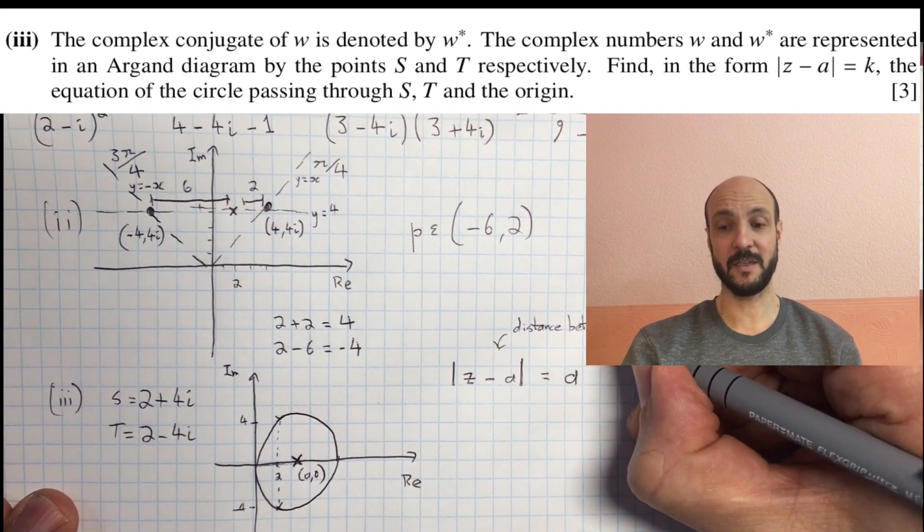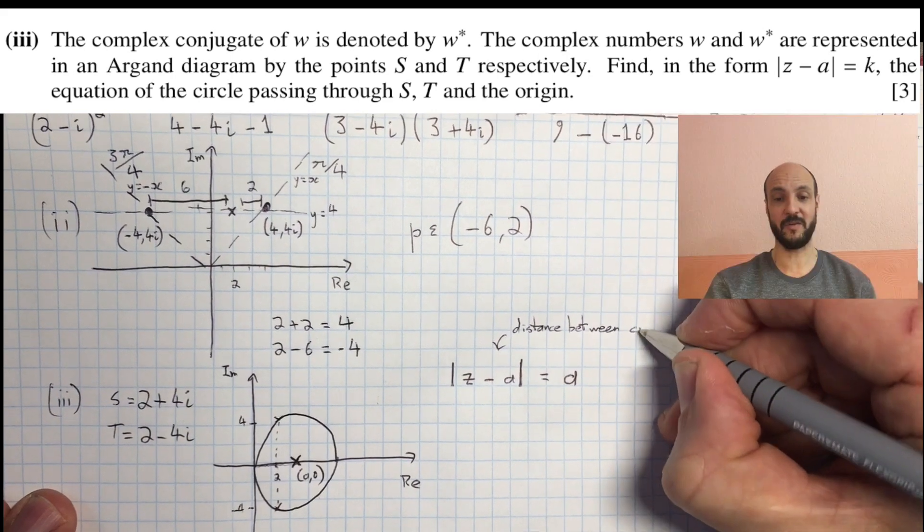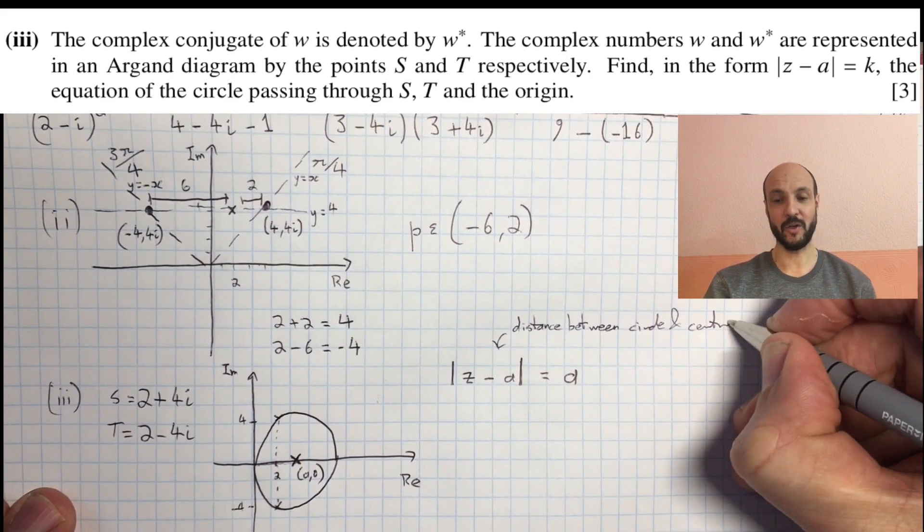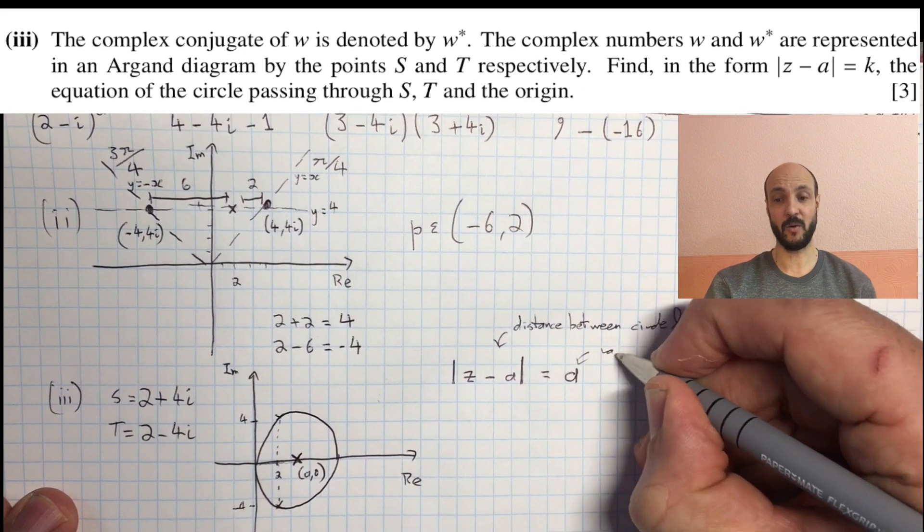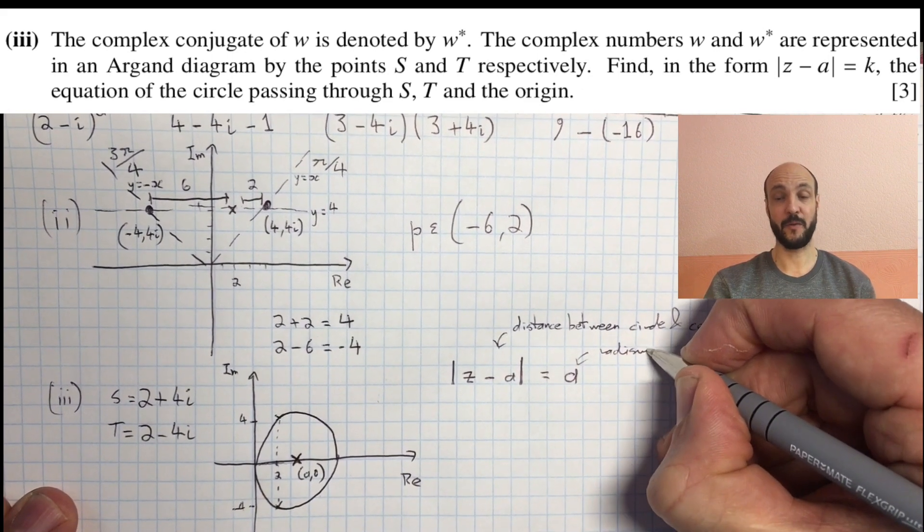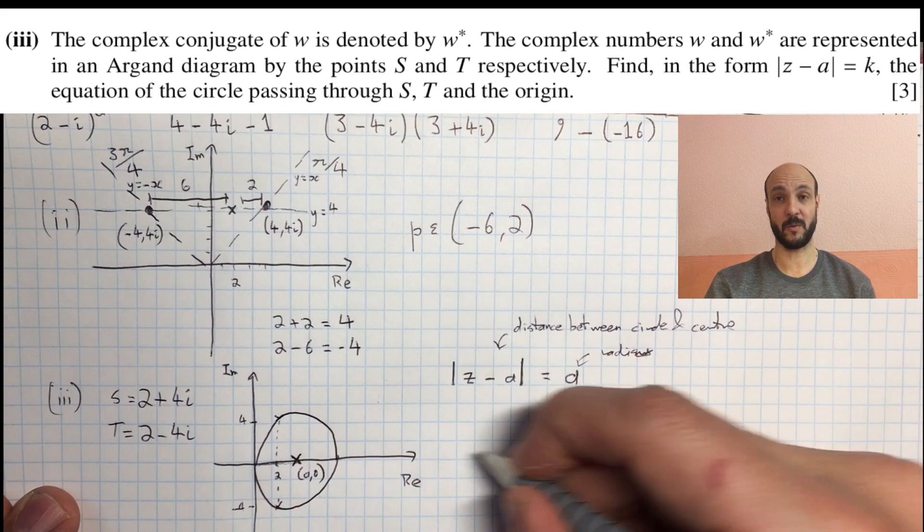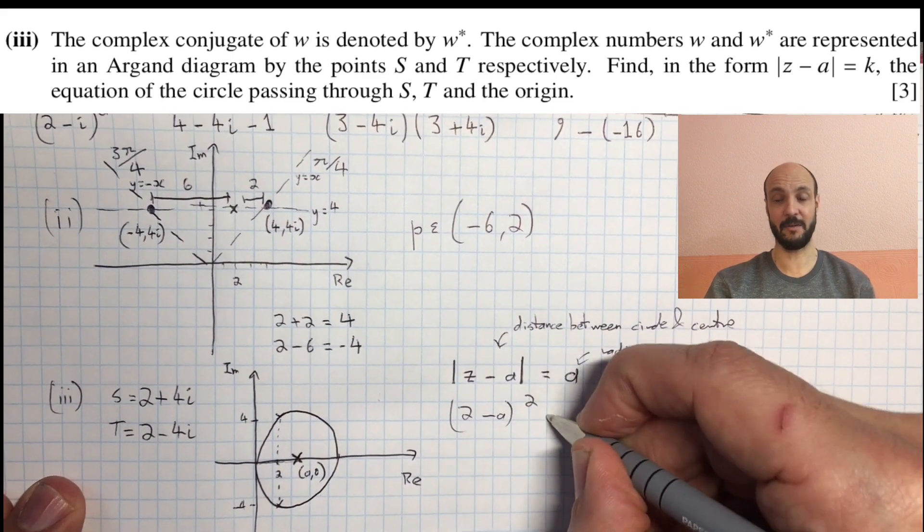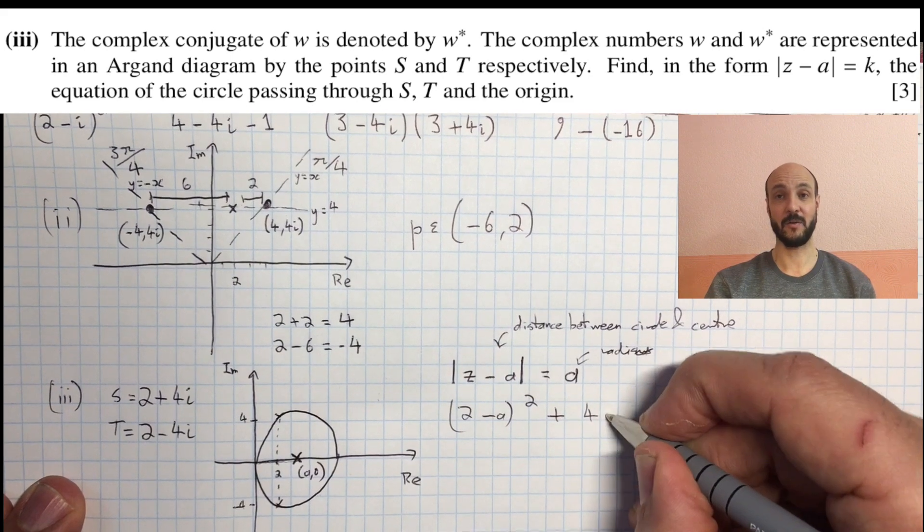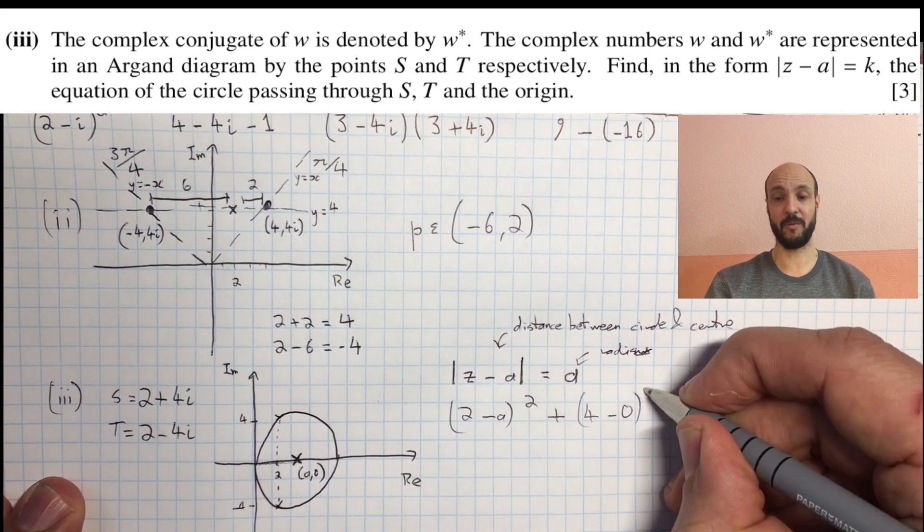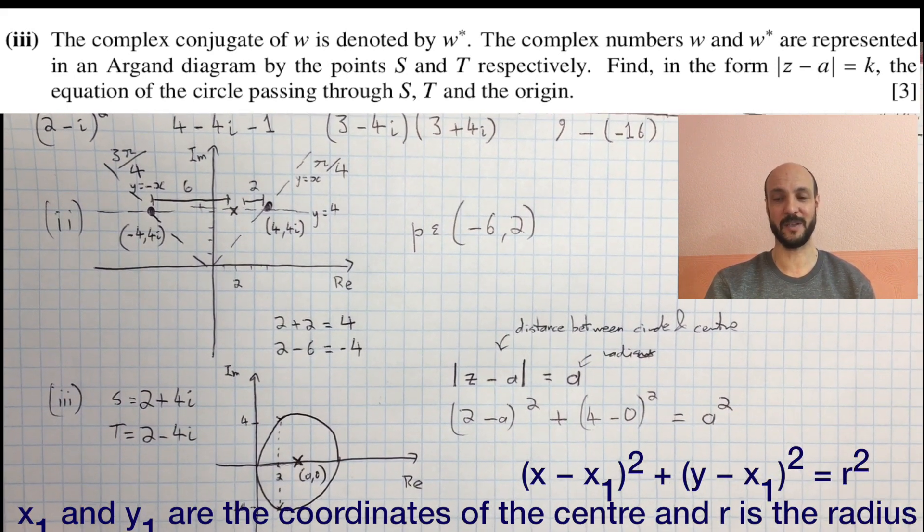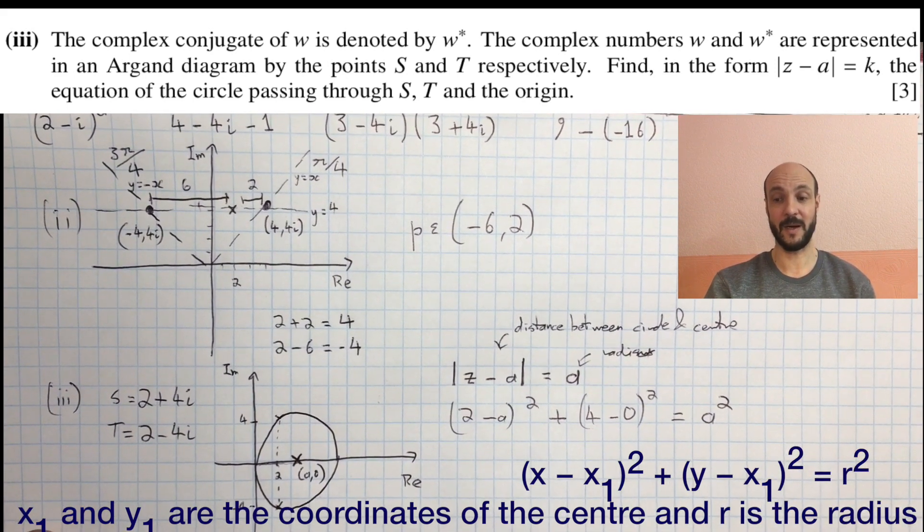And then using our circle formula with the information we've got, if we take our point 2 plus 4i, we've got 2 minus a all squared plus 4 minus 0 all squared, because the y-coordinate of the centre is 0, is equal to a all squared. Just applying our formula with the circle, x minus the x-coordinate of the centre squared plus y minus the y-coordinate of the centre squared equals a squared.